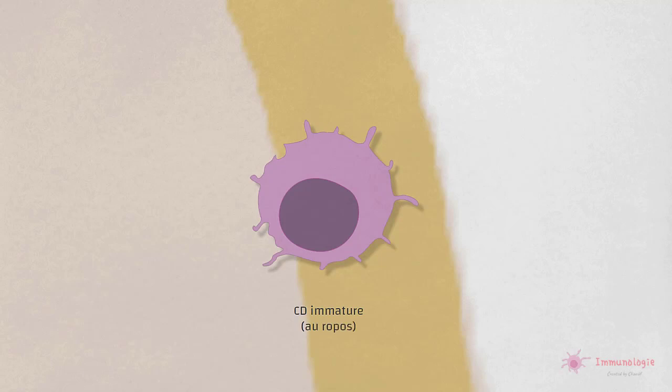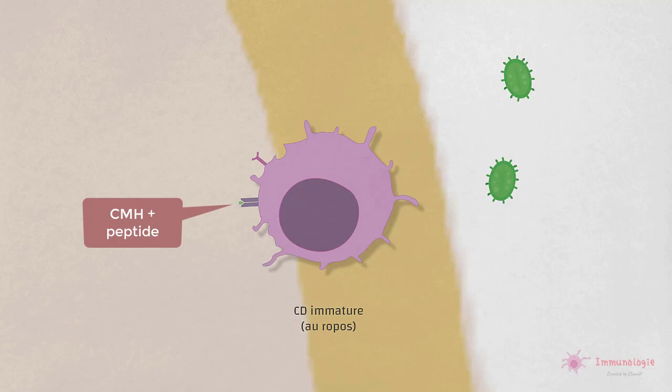Les cellules dendritiques résidant dans les tissus au repos sont parfois appelées cellules dendritiques immatures. Elles expriment de nombreux récepteurs membranaires de type PRR, comme les lectines de type C. Les cellules dendritiques utilisent ces récepteurs pour capturer et endocyter les microbes, puis transforment les protéines ingérées en peptides capables de se lier aux molécules de CMH. Ce processus est appelé apprêtement.